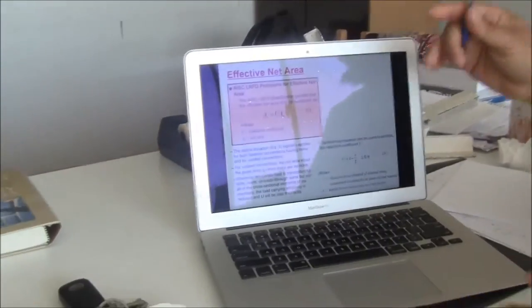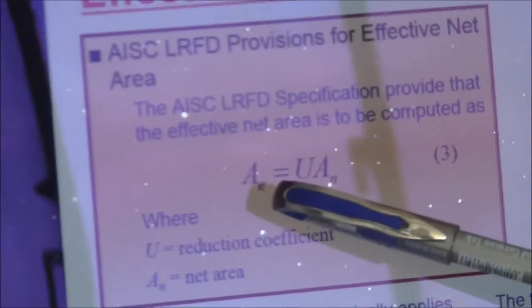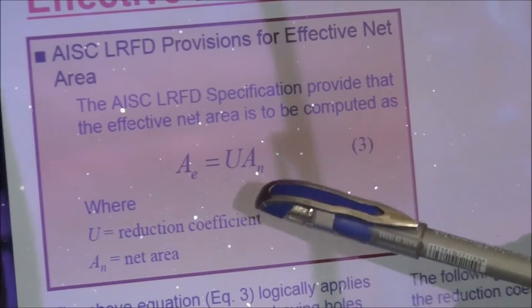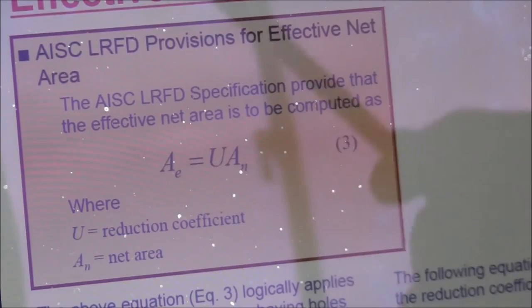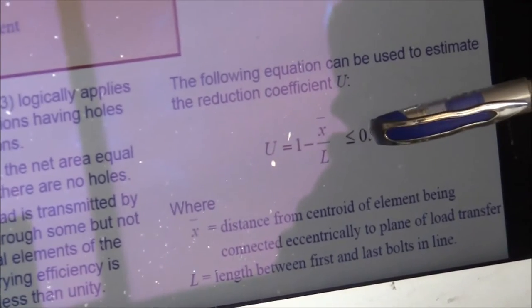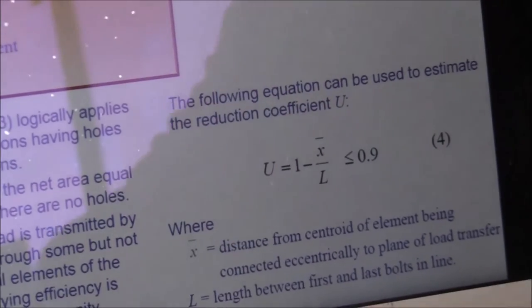For calculating fracture tensile strength, we need A_effective = U times A_n, where U is the shear lag reduction coefficient. The formula for U is 1 minus x̄ over L, which will often equal 0.9 or more. If you calculate from the equation and get more than 0.9, you can use 0.9.